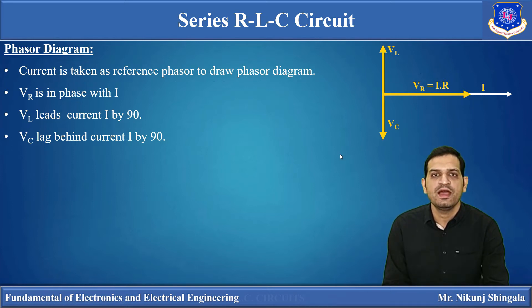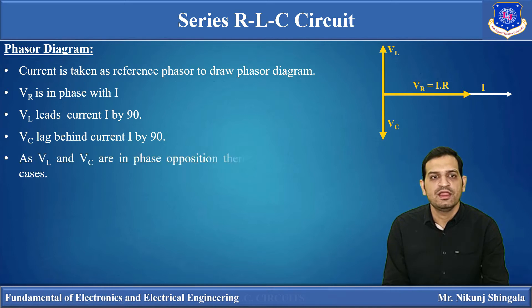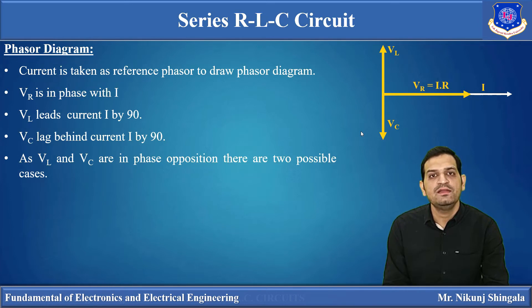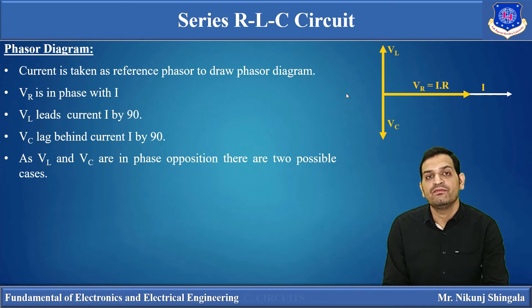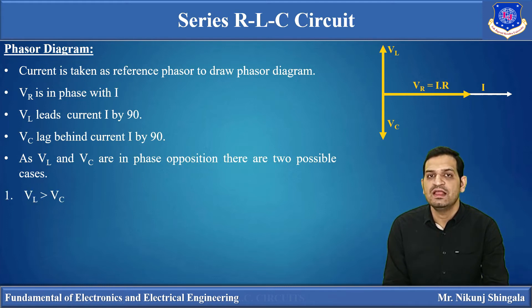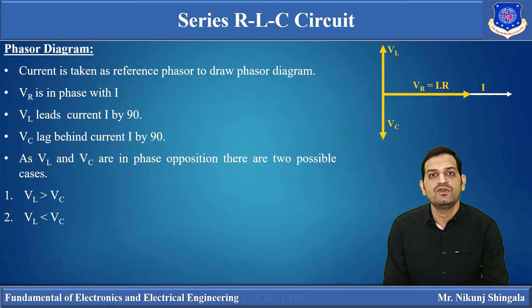This is how we draw the phasor diagram for a series RLC circuit. Now Vl and Vc are exactly in opposite directions — they are in phase opposition — and the phase difference between Vl and Vc is 180°, so they will try to cancel each other out. Since Vl and Vc oppose each other, there are three possibilities. I am going to discuss two in this video: first, Vl greater than Vc; second, Vl less than Vc. The third case, Vl equal to Vc, will be discussed in the next video lecture on resonance.